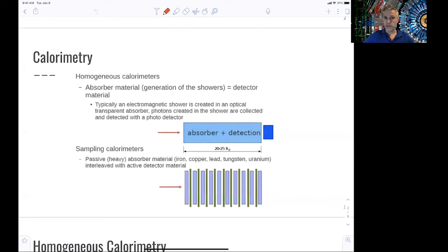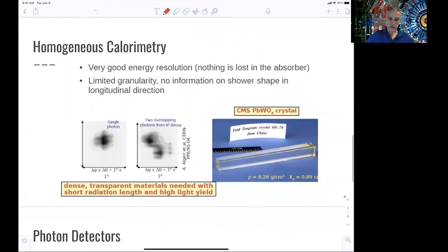Alternatively, one can use sampling detectors, where you have heavy material being used to induce a shower, and then the detection material to count the number of photons. Homogeneous calorimeters have typically very good energy resolution because nothing gets lost. Everything is measured in the absorber, which is the detector. But that leads to some limitations. For example, the granularity of the detector is typically limited, and there's no longitudinal information about the shower development. You basically have one block, like a lead glass block or a lead tungsten block, which is shown here, used for the measurement.